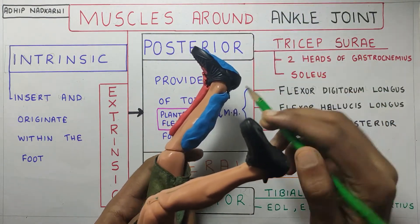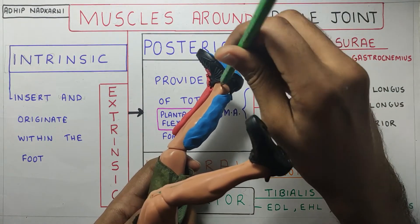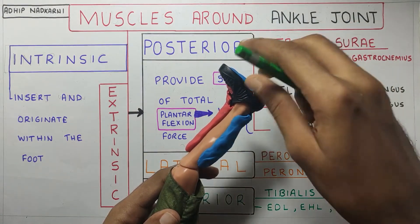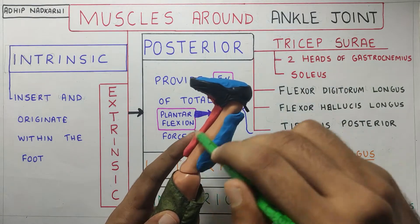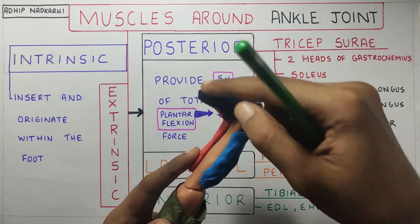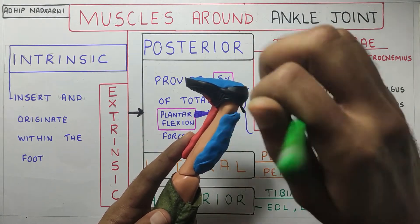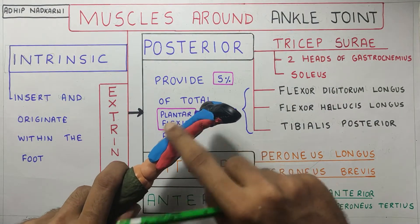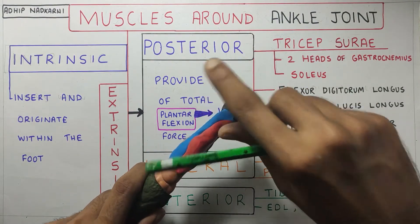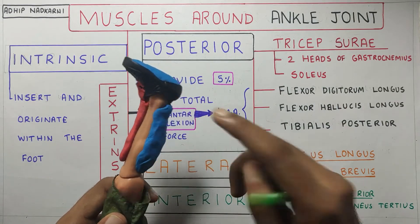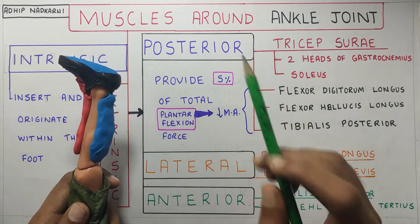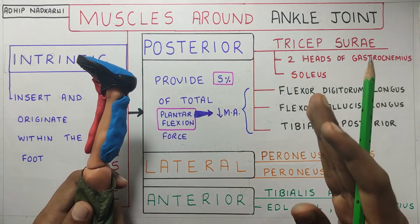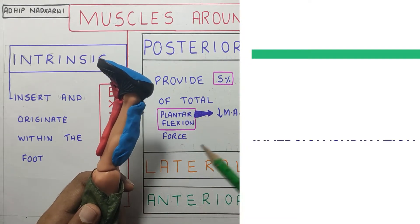The ankle joint axis is slightly inclined. Muscles placed in front of this axis cause forward movement — dorsiflexion. Posterior muscles cause plantar flexion. Lateral muscles cause eversion. And muscles on the medial side — under the posterior compartment, the posteromedial side — cause inversion at the ankle joint.